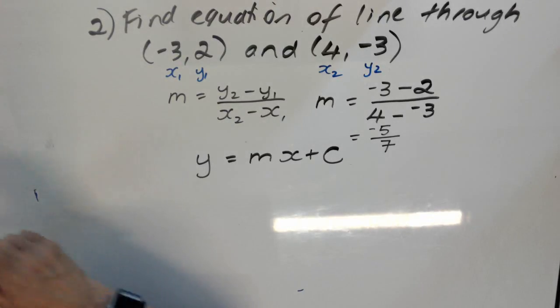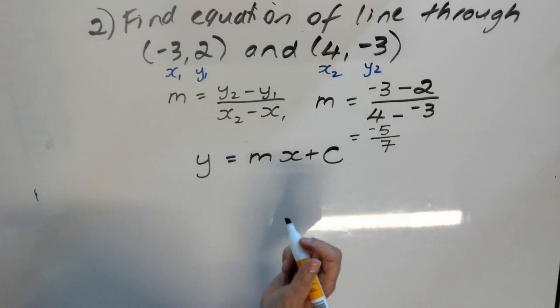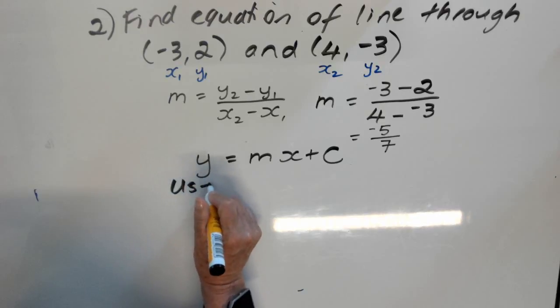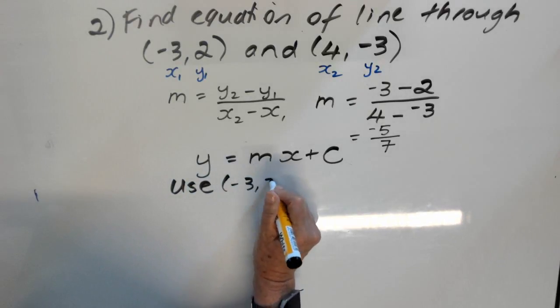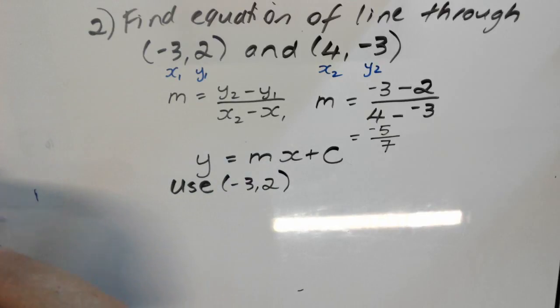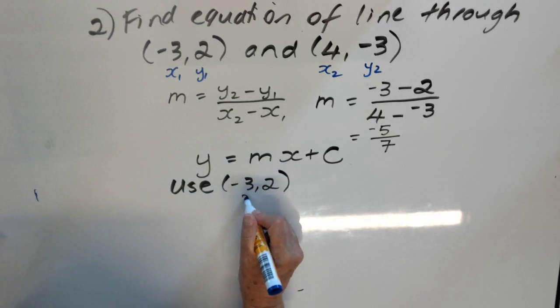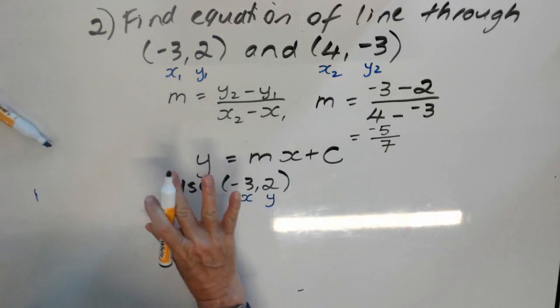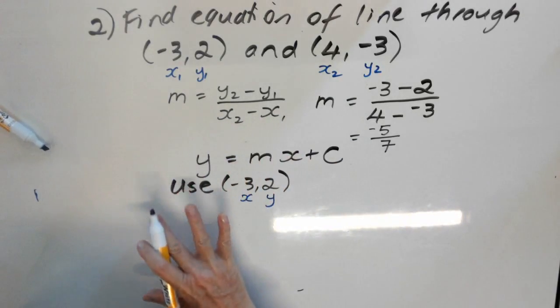So, we're going to use a point that we're given. I think it would be good to use the first one. So, we might use negative 3, 2. And underneath that, I'm going to write x and y.